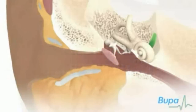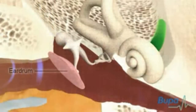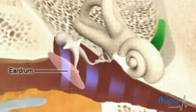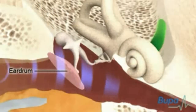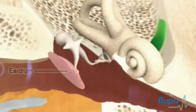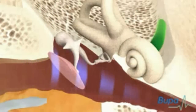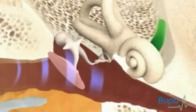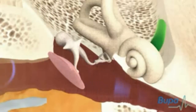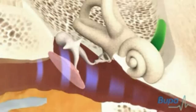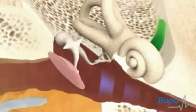The sound waves reach the eardrum and cause it to vibrate. The higher the pitch or frequency of the sound, the faster the eardrum will vibrate.